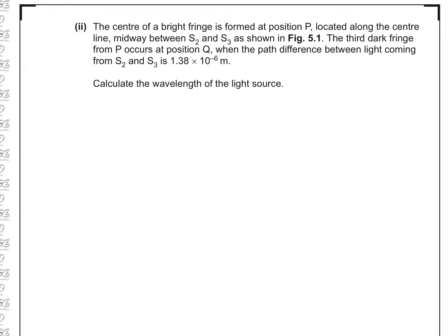Part 2. The centre bright fringe is formed at position P, located along the centre line, midway between S2 and S3, as shown in figure 5.1. The third dark fringe from P occurs at position Q, when the path difference between the light coming from S2 and S3 is 1.38 times 10 to the minus 6 metres. Calculate the wavelength of the light source. First we need to have a look at that diagram.